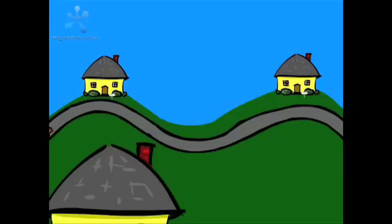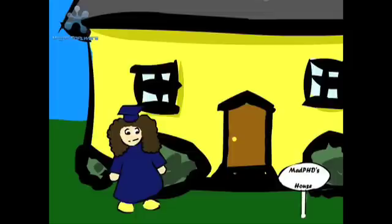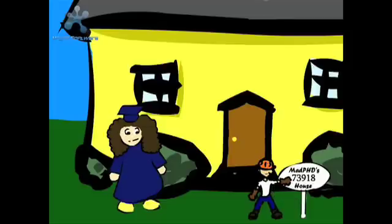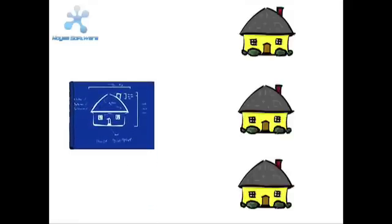It looks like we've got a problem. How is Mad Doctor's family going to find her house in a sea of identical houses? Her house needs an address. The address identifies the location of the house. Similarly, there must be some way for a program to refer to the individual objects that are created from the same class definition. This is accomplished by using reference variables.